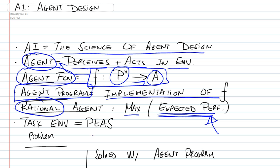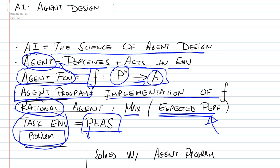The first step in the agent design is to come up with a task environment — this is our problem. The task environment consists of four aspects, and they can be memorized with the word PEAS. P is for performance measurement, which is what we seek to maximize. E is the environment where the agent is going to be operating. A stands for actuators, which are available to the agent. And finally, S is the sensors that the agent will use to sense the environment. So first the sensors sense the environment, and the agent uses the actuators to maximize the performance.